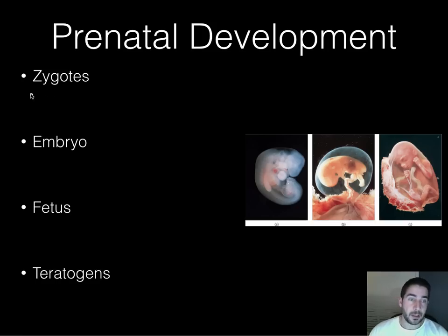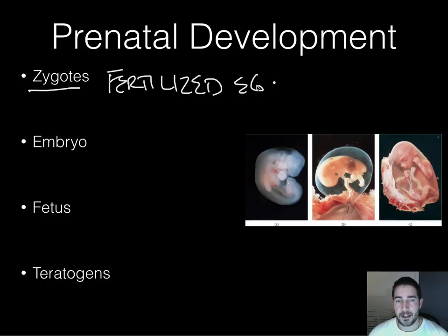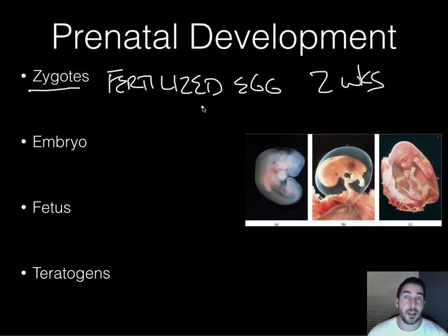So, birth. First thing is you have an egg. It meets a sperm and a zygote is created — that's a fertilized egg. A zygote is a fertilized egg. You were a zygote for about two weeks, and rapid cell division goes on during that time — starting from one cell that divides rapidly, big time, for those two weeks.